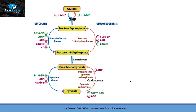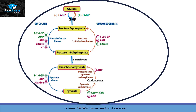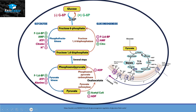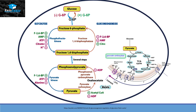Glycolysis usually occurs inside the cytoplasm. After converting glucose into pyruvate, pyruvate goes into the mitochondria and converts into acetyl-CoA to enter the TCA cycle. But in gluconeogenesis, pyruvate converts into oxaloacetate with the help of an enzyme called pyruvate carboxylase. This oxaloacetate converts back into malate, which can exit the mitochondria into the cytoplasm. Inside the cytoplasm, malate converts back into oxaloacetate, and with the enzyme phosphoenolpyruvate carboxykinase, it converts into phosphoenolpyruvate — overcoming the first checkpoint.